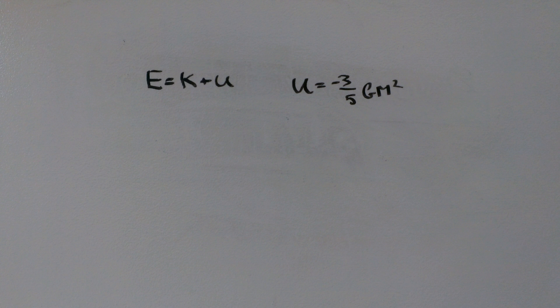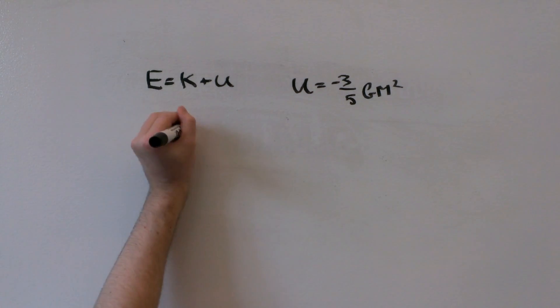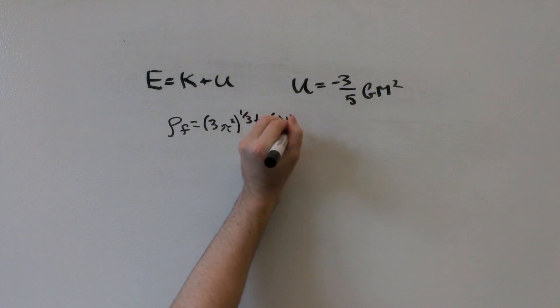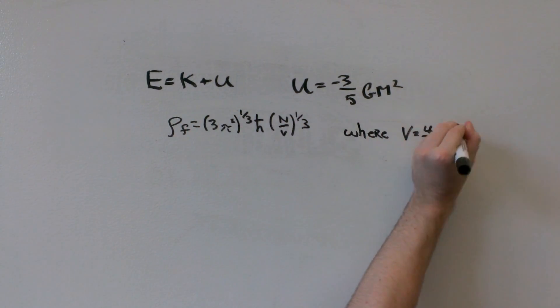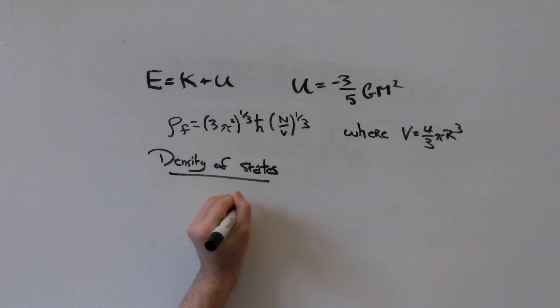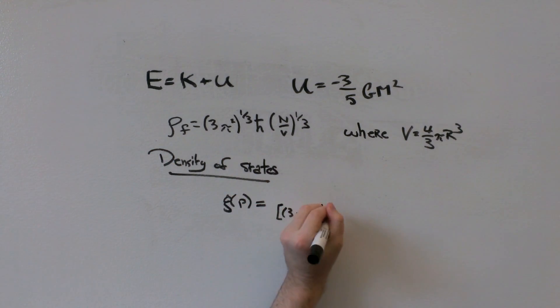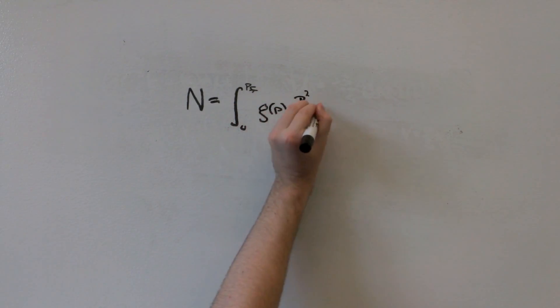By assuming that the star is highly degenerate or that all the electrons are in the lowest possible energy states, we can say that this is equivalent to thinking about an electron gas at temperature zero. Hence, we may find the Fermi momentum and the density of states using momentum space. Then, we may find the total number of particles by integrating from momentum zero to the Fermi momentum, and then the total amount of kinetic energy.